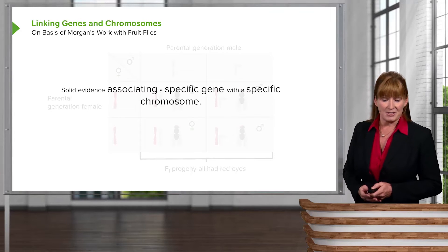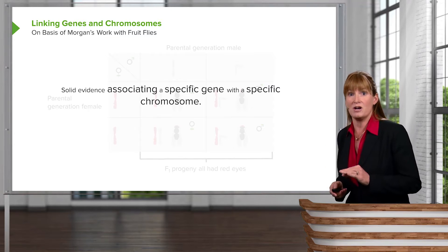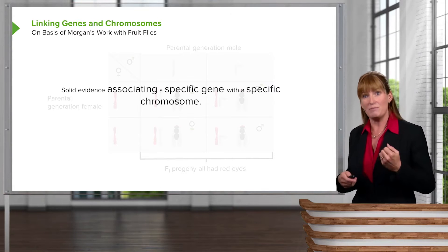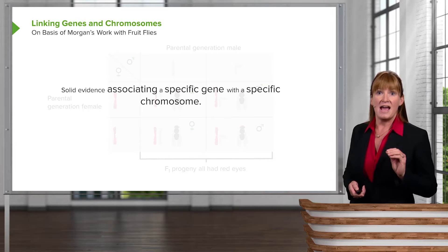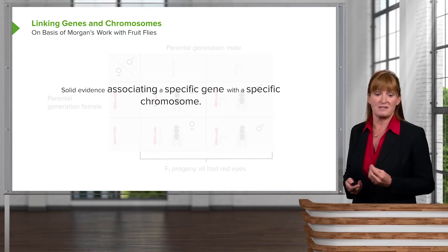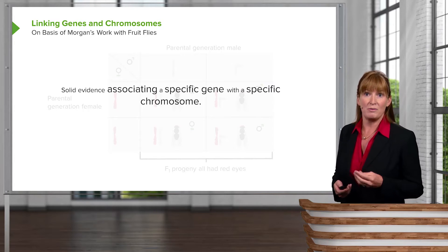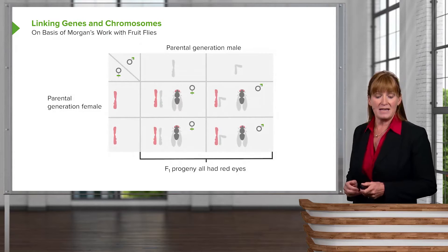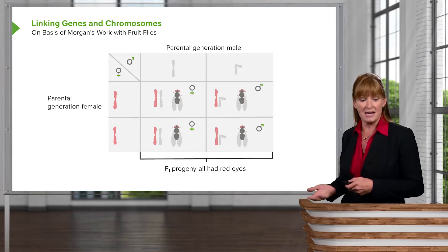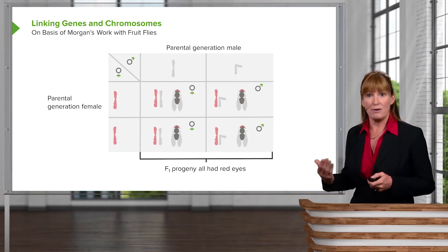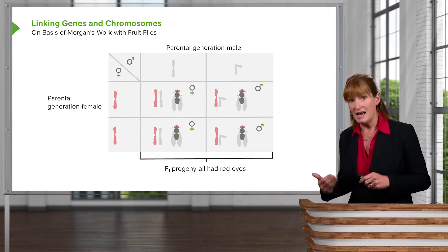The next piece of the puzzle is to determine that this is really what's going on. It was a little sketchy in the beginning — people really didn't believe it, and it took about 10 years for the idea to sink in. It was culminated with the findings of Thomas Hunt Morgan, who was doing work with fruit flies. He was looking at red eye color and found some flies that had white eye color. When he performed a cross between a white-eyed male and a red-eyed female, he found that the F1 progeny all had red eyes.